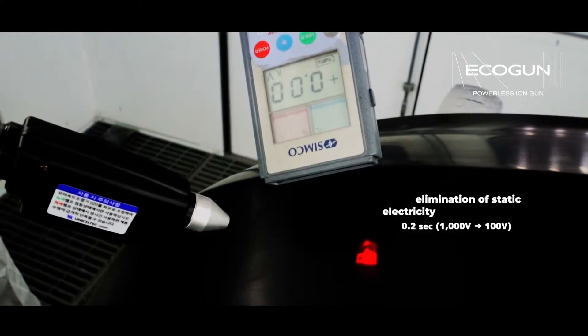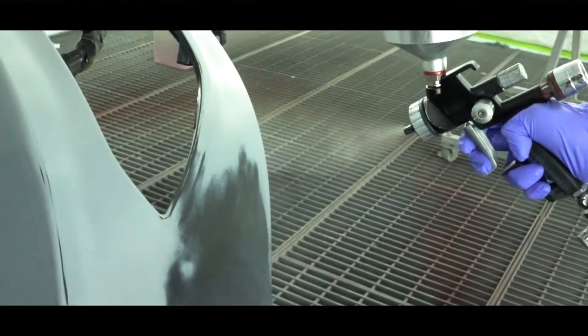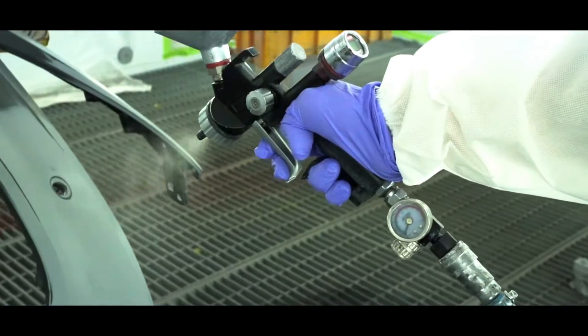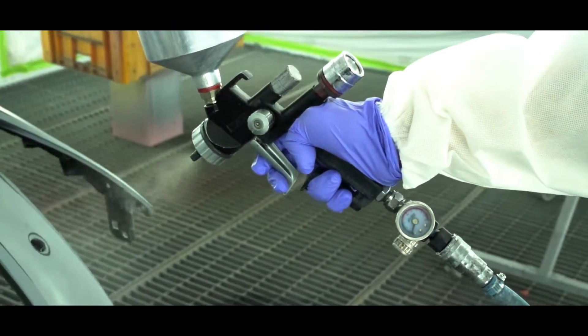Ecogun reduces dust content in paint work by almost 95%, improves paint adhesion and uniformity of application, and also can help to reduce clouding, dark edged peel-off, and color matching difficulty problems.